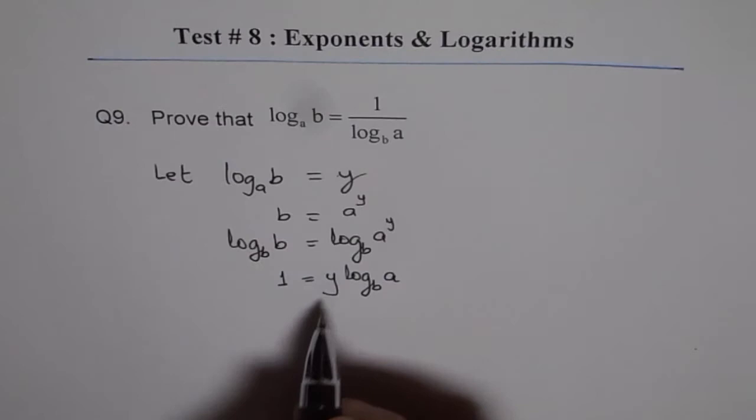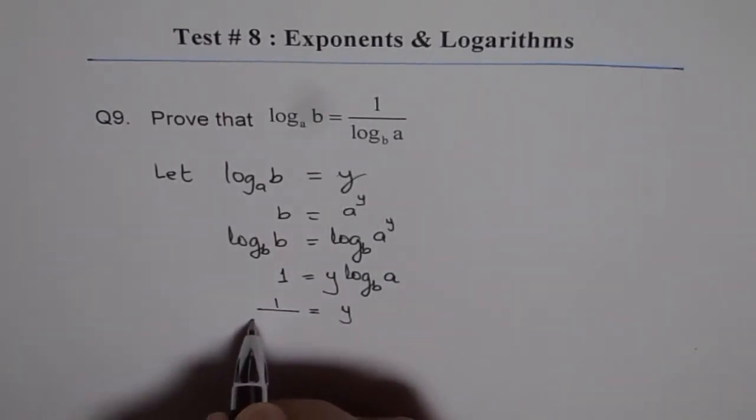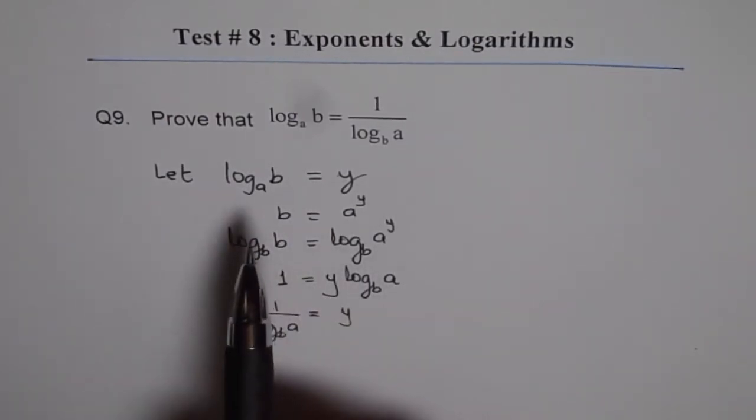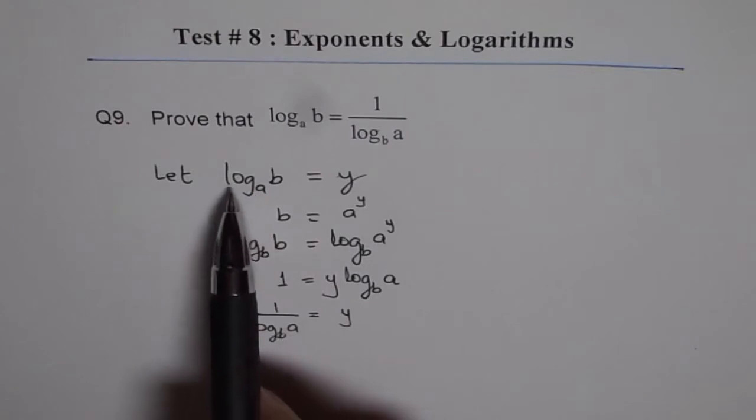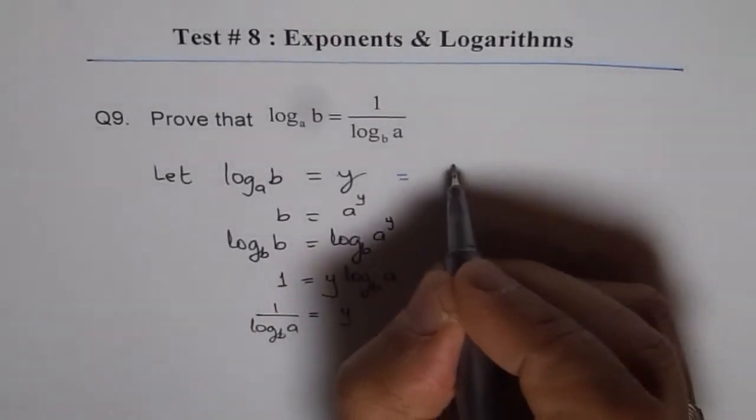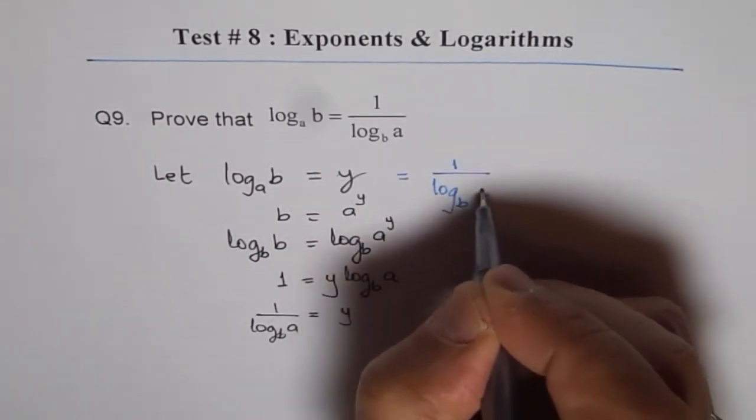Now from here what is y? Rearrange this equation and get y equals 1 over log b of a. So we started with log a of b equals y and now we know that y equals 1 over log b of a. So we can write this as log a of b equals 1 over log b of a.